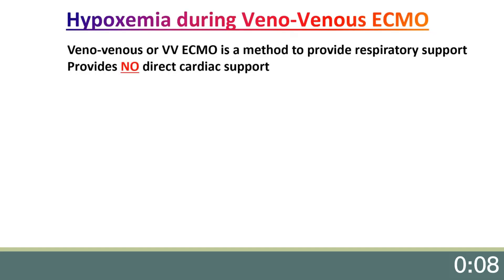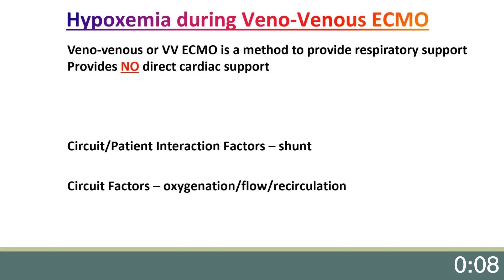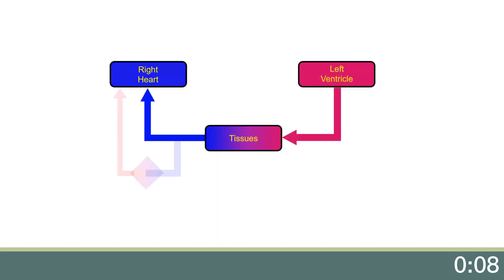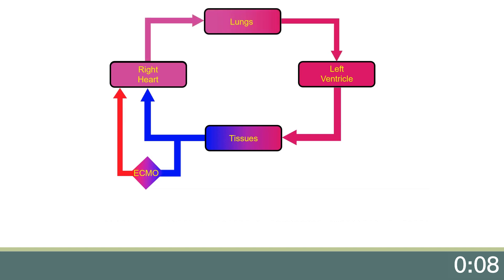Despite the ECMO circuit, hypoxemia can occur during veno-venous ECMO and can be caused by multiple factors, including circuit-patient interaction factors, circuit factors in and of themselves, and patient factors. During V-V ECMO support, a fraction of deoxygenated venous return blood is sent through the ECMO circuit to an oxygenator, which adds oxygen and removes carbon dioxide. After gas exchange, this blood is then sent through the outflow cannula to the right heart, resulting in a mixed venous saturation in the right heart that has a much higher oxygen saturation than you would expect in a patient not on V-V ECMO support. This mixed blood is then pumped by the right ventricle to the lungs where further oxygenation may or may not take place depending on the patient's respiratory function.